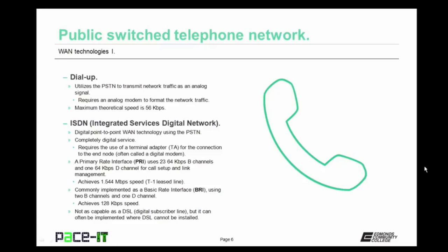A PRI can achieve 1.544 megabits per second speed, commonly referred to as a T1 leased line. The most commonly implemented form of ISDN is the BRI — the basic rate interface. It uses only two B channels and one D channel, and can achieve speeds of up to 128 kilobits per second. ISDN is not as capable as a digital subscriber line, or DSL, but it can often be implemented where DSL cannot be installed. XDSL is the term for generic DSL — a digital WAN technology that utilizes the PSTN.